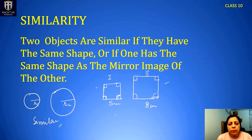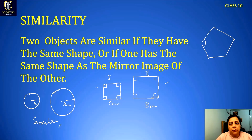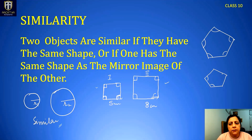If we are talking about polygons, polygons have inclination between their sides. If their angles are the same but sizes may differ, then they are similar. The basic requirement of similarity in polygons is that they should have the same angles and their sides may be proportional.